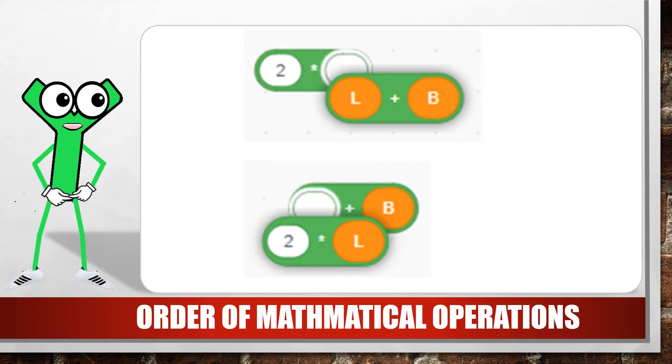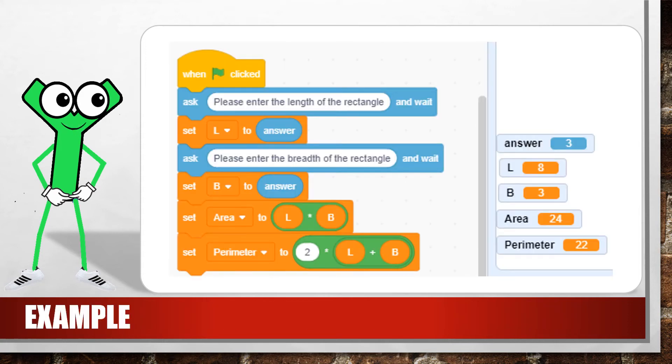Here, L and B are added together and then the sum is multiplied by 2. But here, L is multiplied by 2 and then B is added. For example, if you are writing a program to calculate the area and perimeter of a rectangle, you must input the length and the breadth as before. Then you have to create two more variables, area and perimeter.